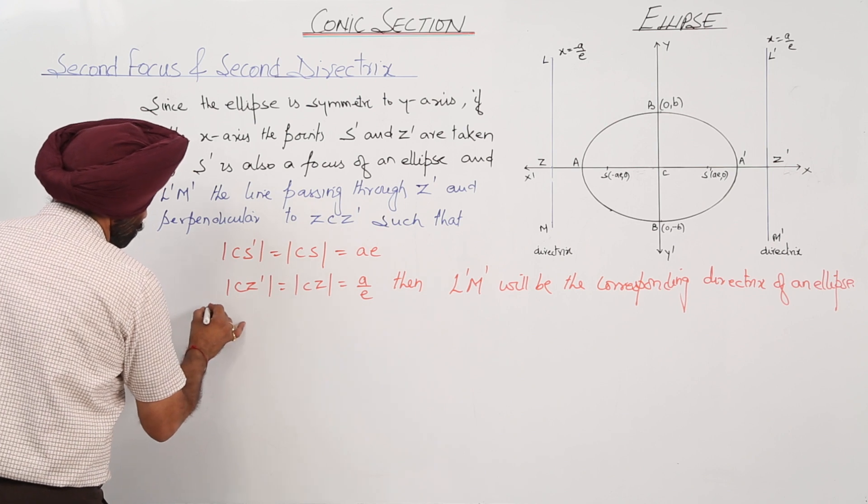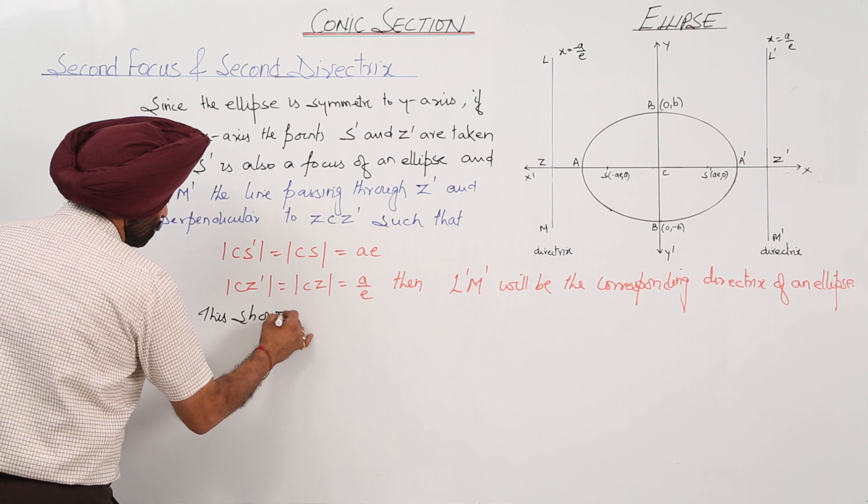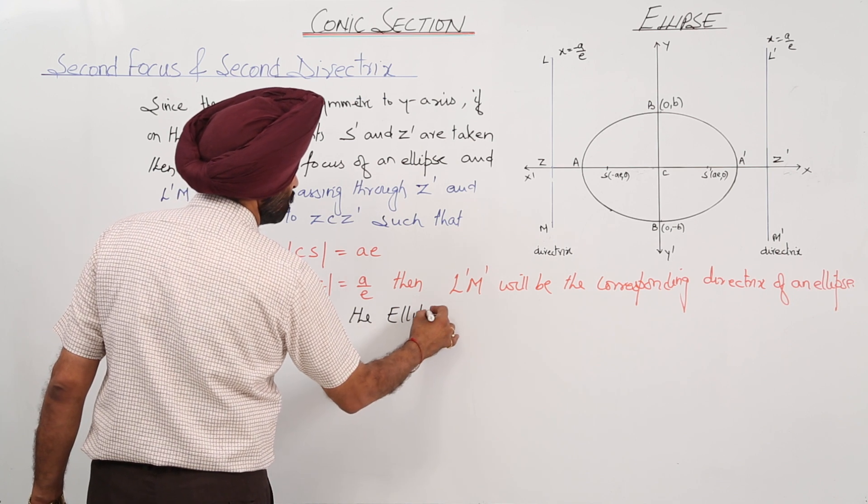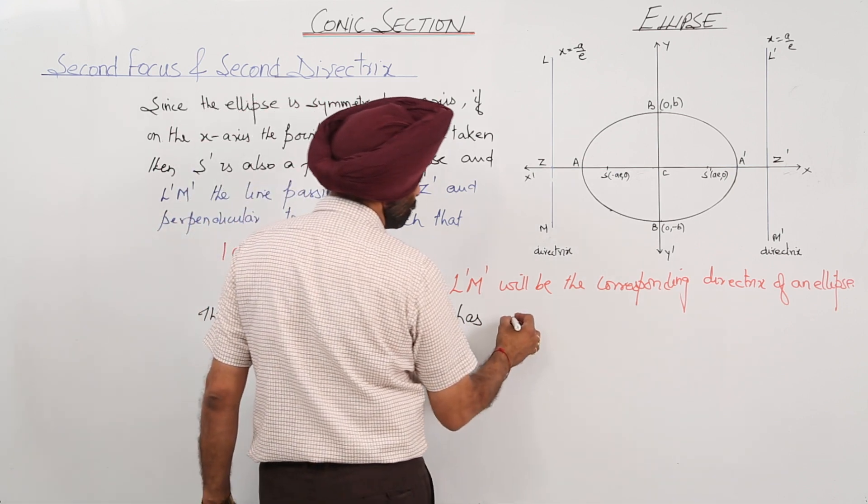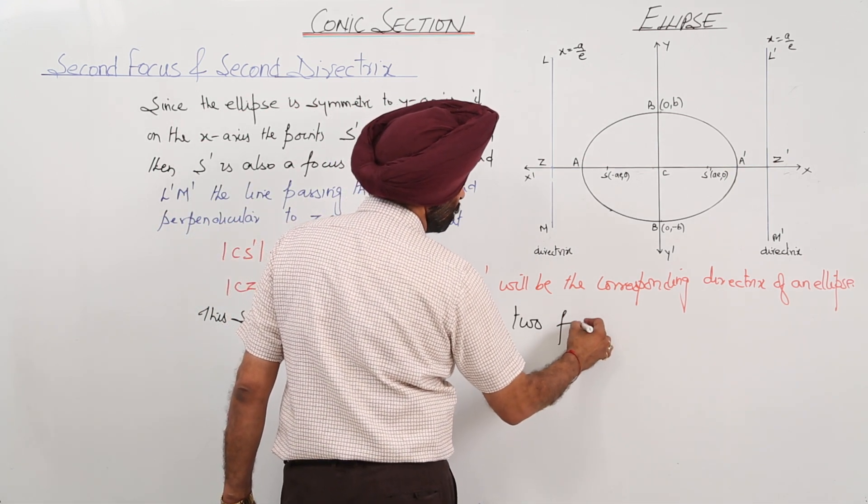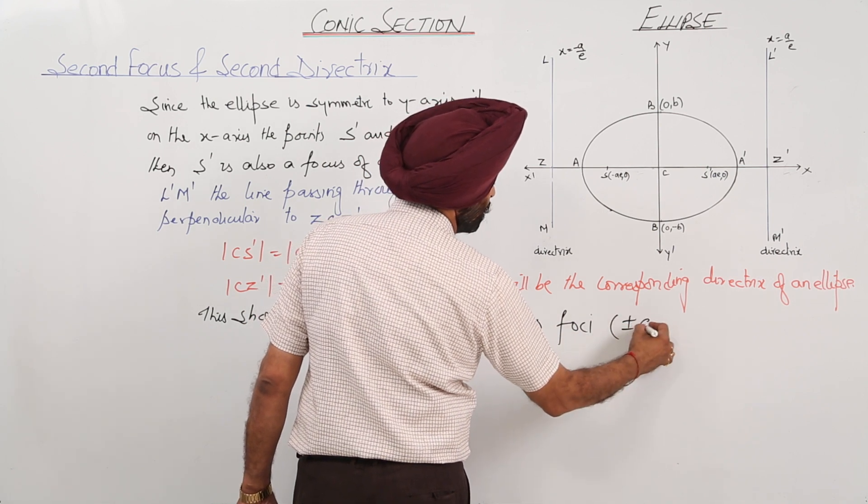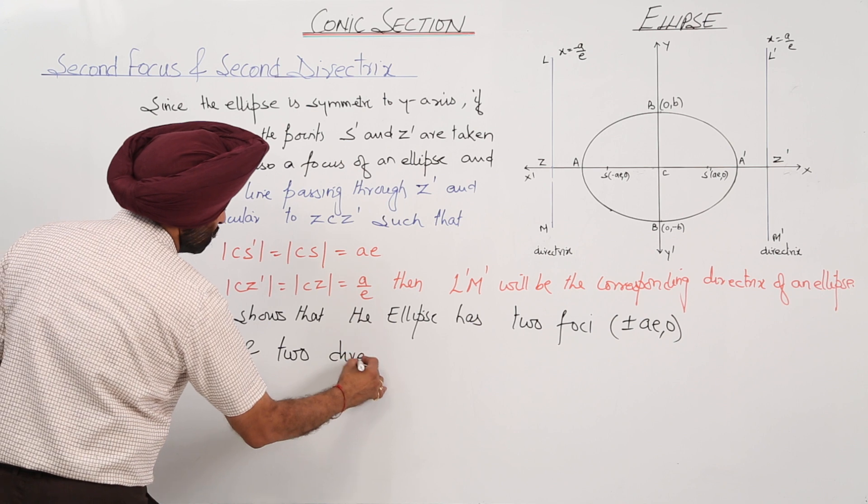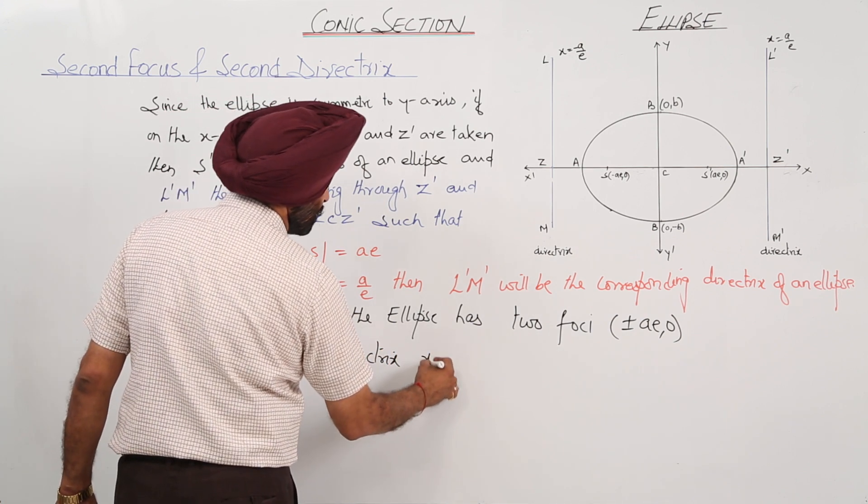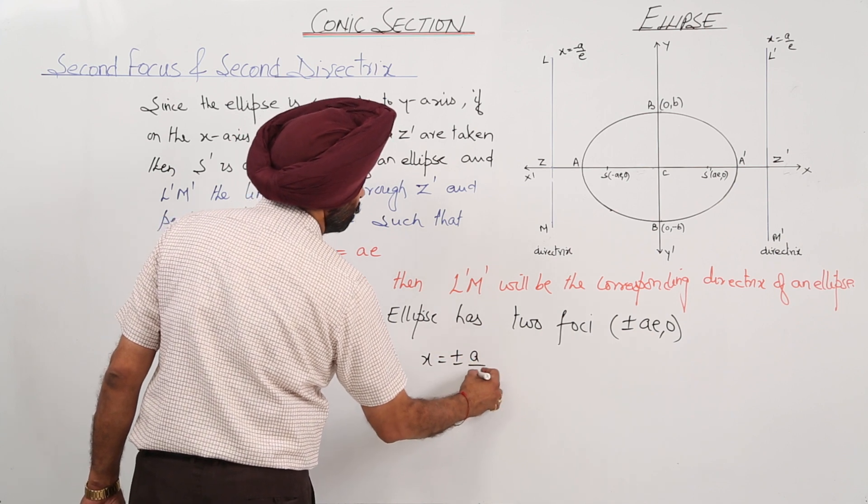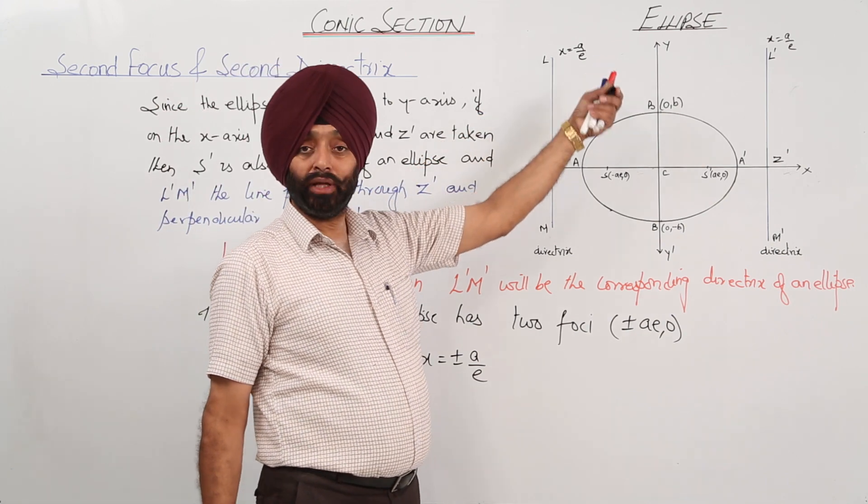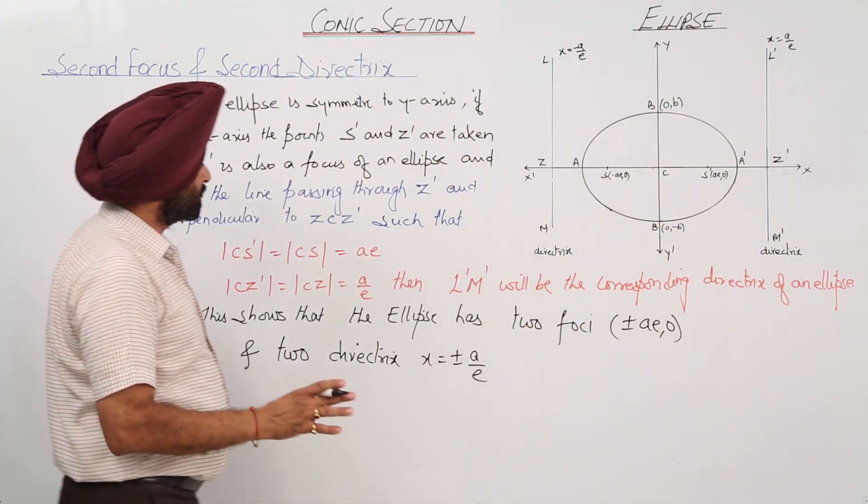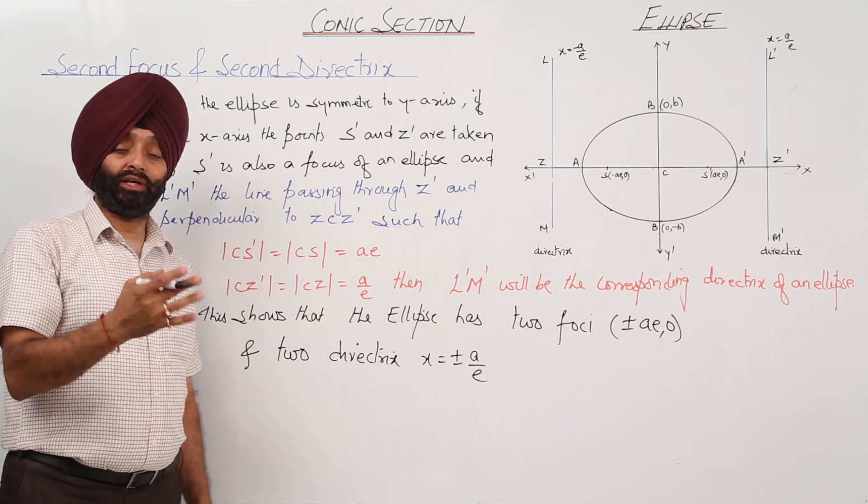This shows that the ellipse has two foci that are plus minus Ae comma 0, and two directrix that are x is equal to plus minus A upon E. I have already mentioned x is equal to negative Ae, x is equal to positive Ae. For coordinates of the focus: Ae comma 0 and negative Ae comma 0. Is it clear? So, that is why we are saying second focus and second directrix. Thank you.